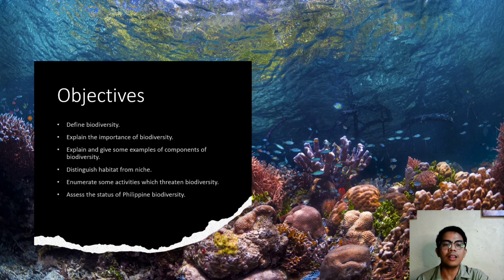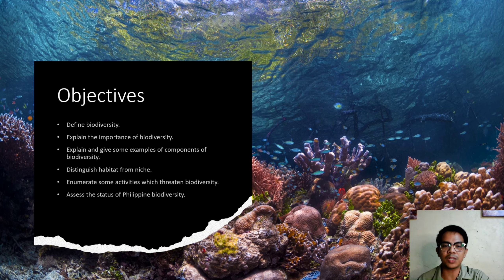So what are the objectives of these lessons? First, to define biodiversity. Second, explain the importance of biodiversity. Third, explain and give some examples of components of biodiversity. Fourth, distinguish habitat from niche. Fifth, enumerate some activities which threaten biodiversity. And lastly, assess the status of our biodiversity.